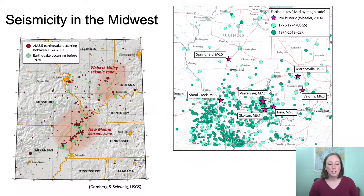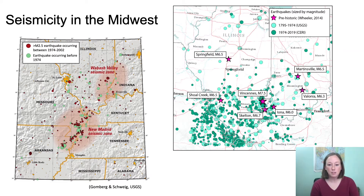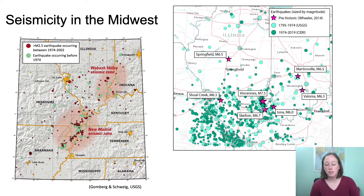The most well-known seismic zones in the Midwest are shown in the figure on the left. The New Madrid seismic zone is located near Missouri, Arkansas, Tennessee, and Kentucky, and the Wabash Valley seismic zone is a little further north between Illinois and Indiana. The figure on the right shows historical earthquake locations in the southern and central parts of those states — the teal dots — and pink stars represent locations of prehistoric earthquakes with estimated magnitudes based on sand blow deposits.